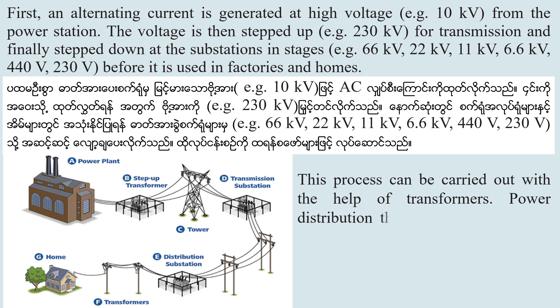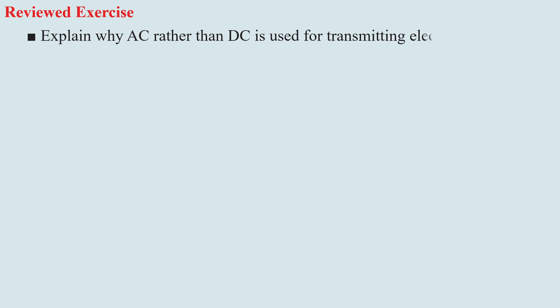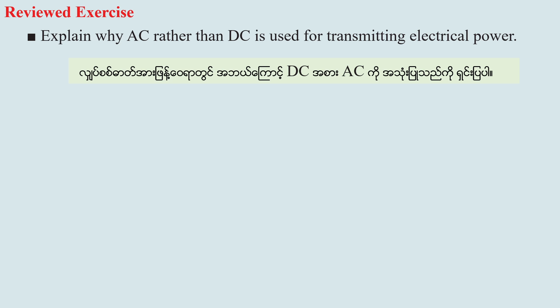This process can be carried out with the help of transformers. The distribution through the grid system is illustrated in the figure. It explains why AC rather than DC is used for transmitting electrical power.